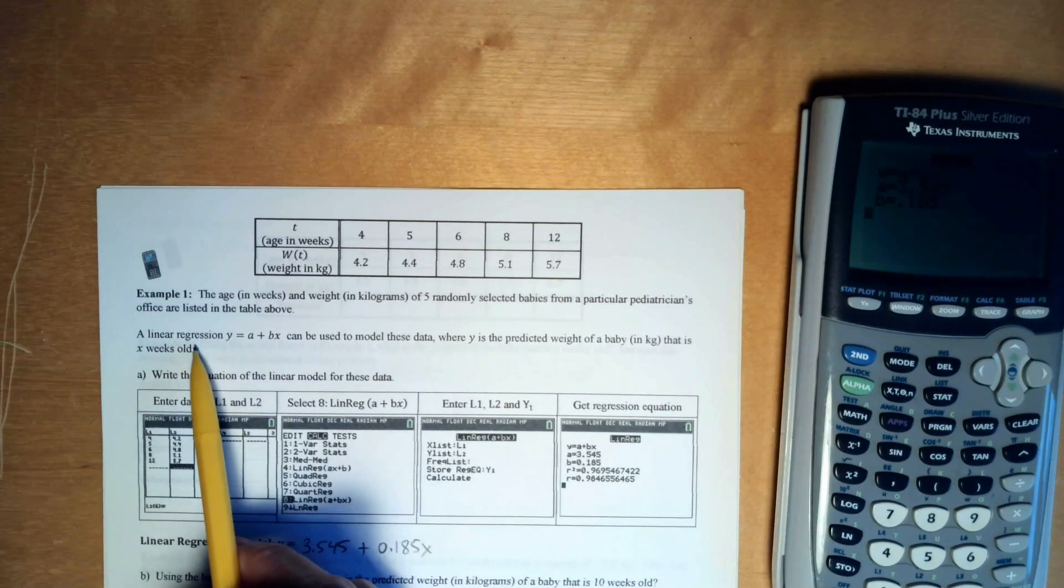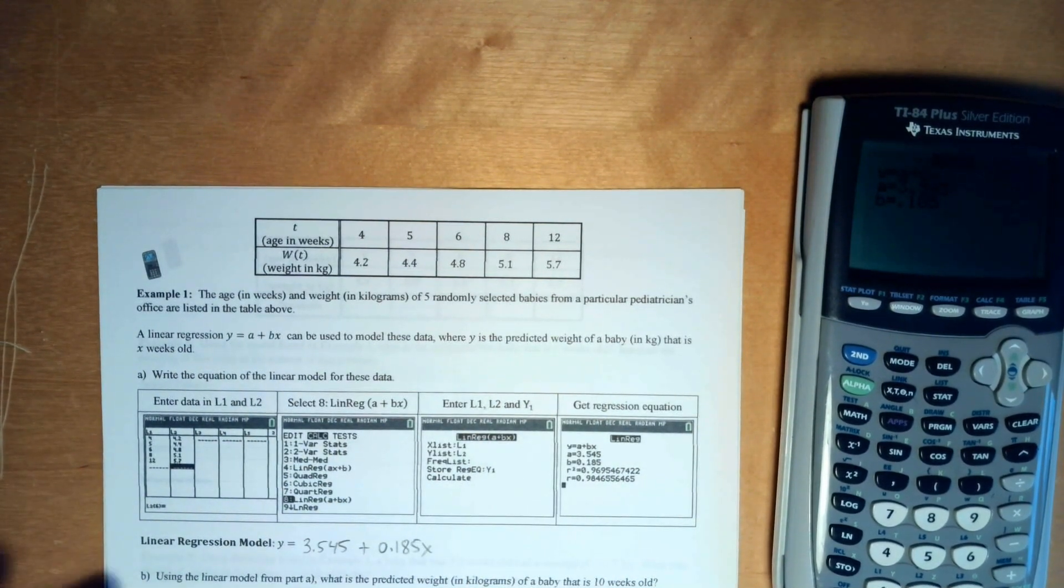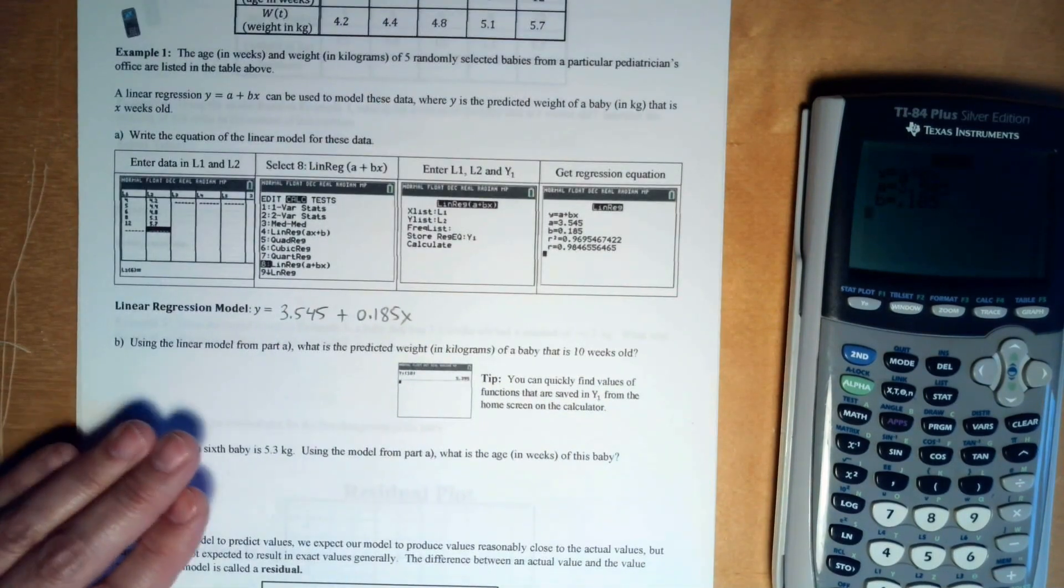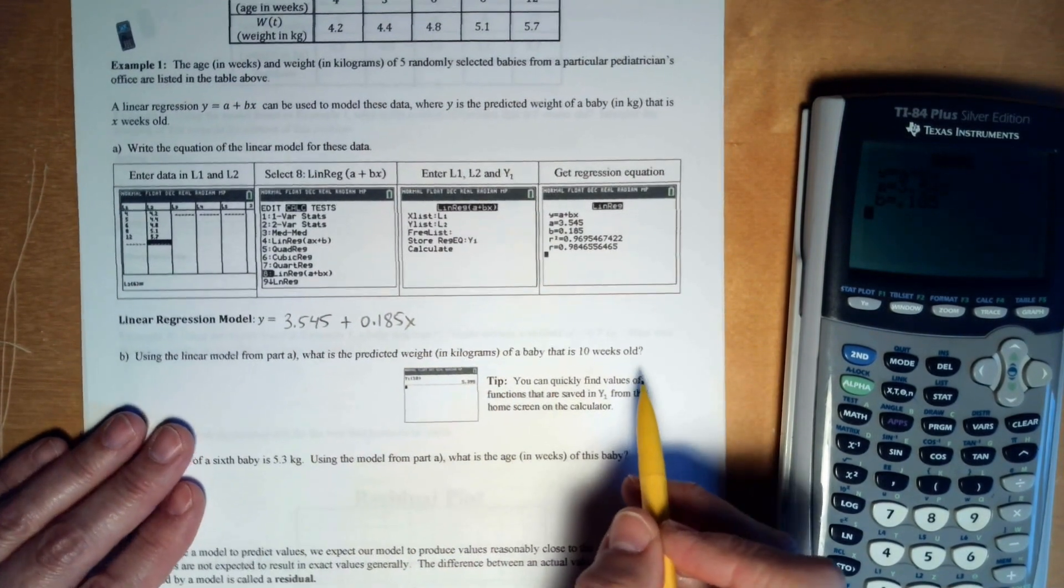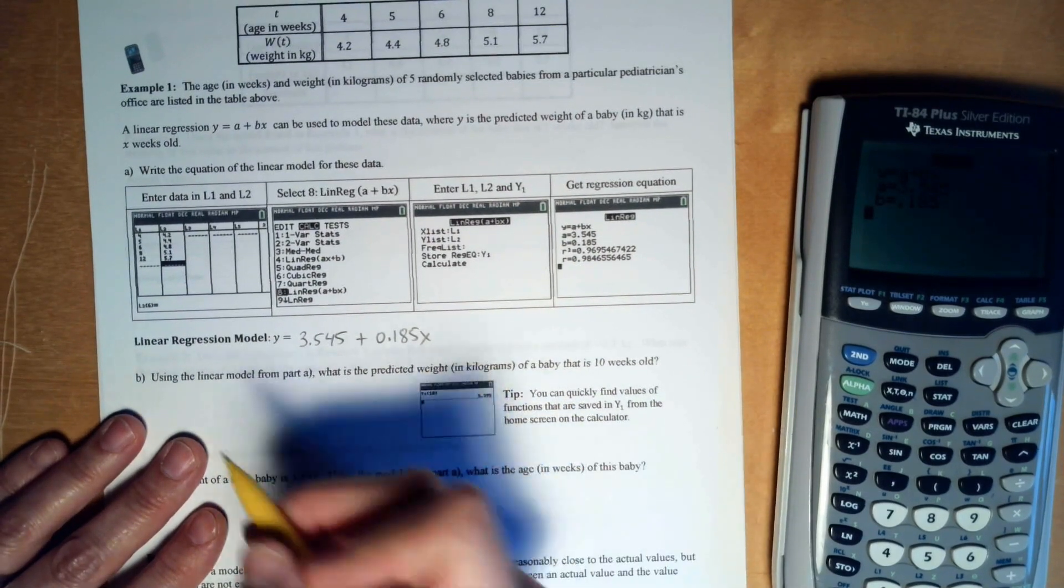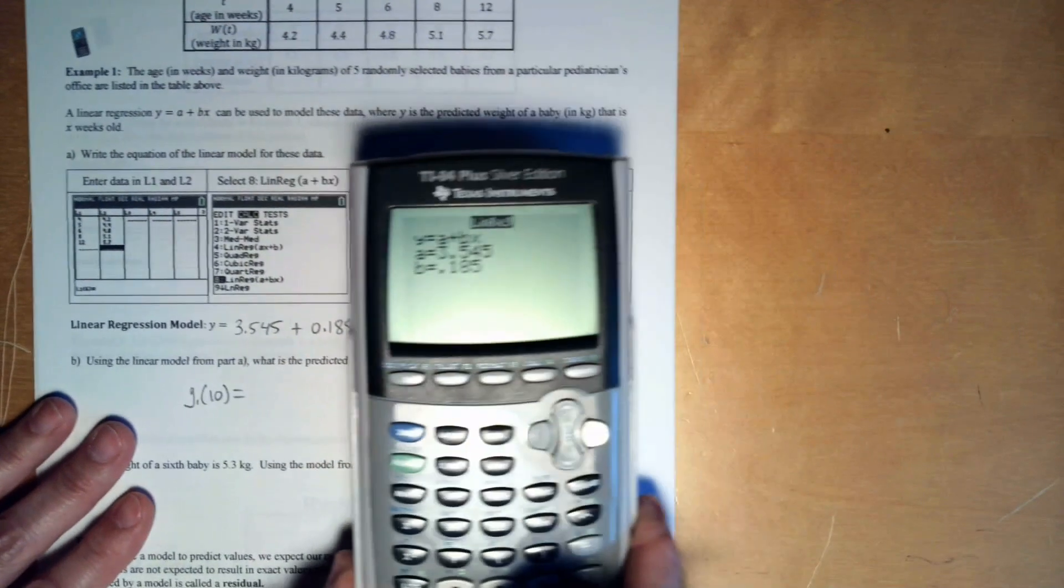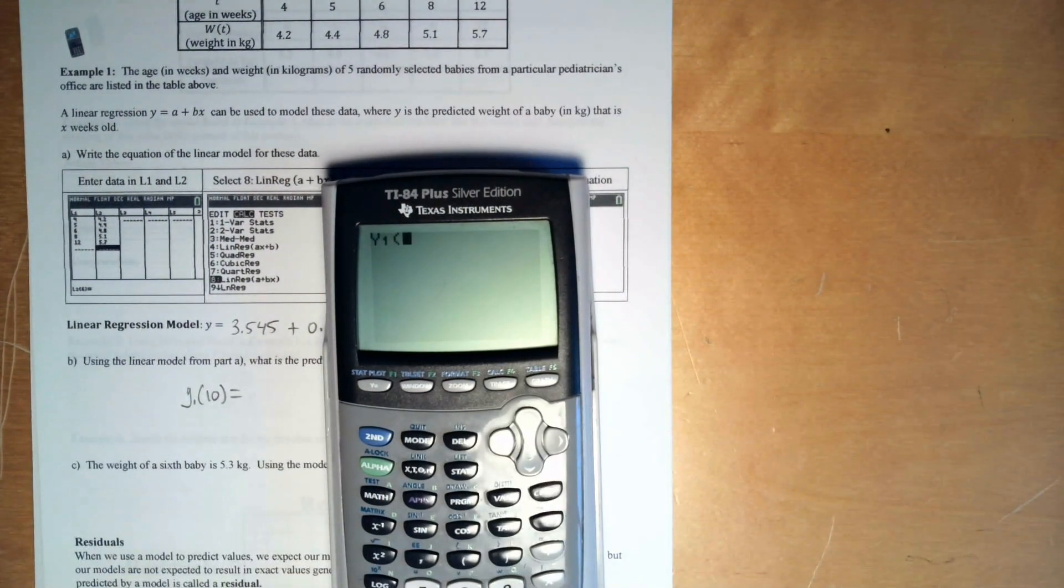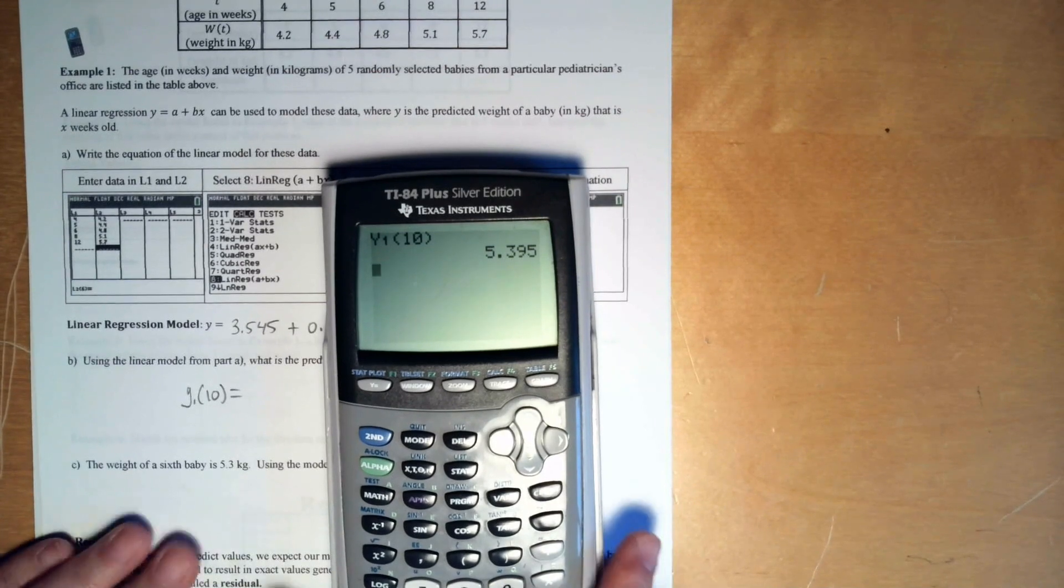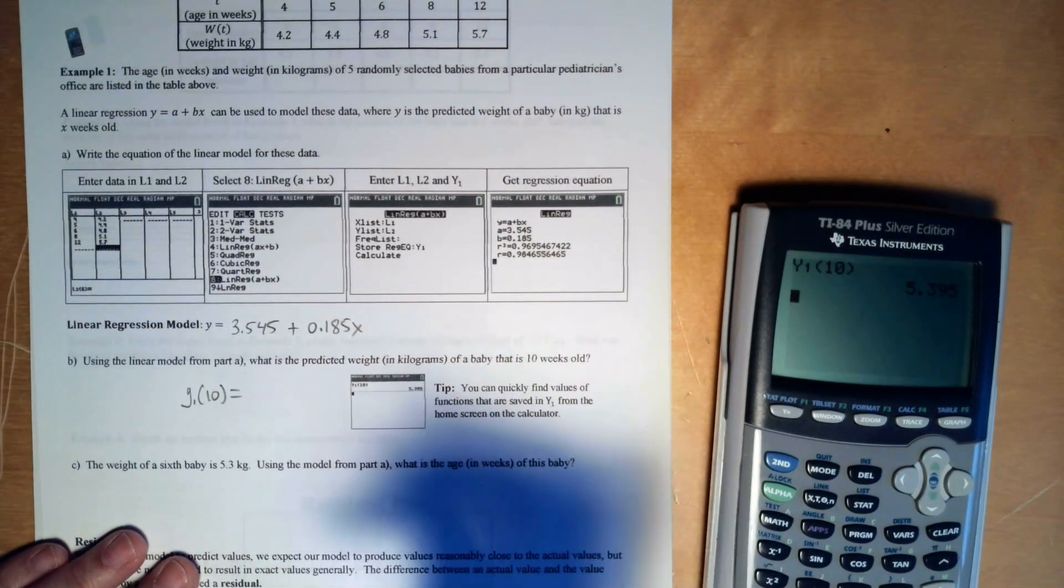So by using the linear model from part A, this problem said to do a linear model, that's why we did it. So we'll talk about some other stuff in a minute. But it says what happens when a baby is 10 weeks old? So we basically want to plug 10 in here. So we want y1 of 10. And remember our calculator can do that for us. So alpha trace, grab y1, put in 10. All things familiar to you. So 5.395 isn't too bad.